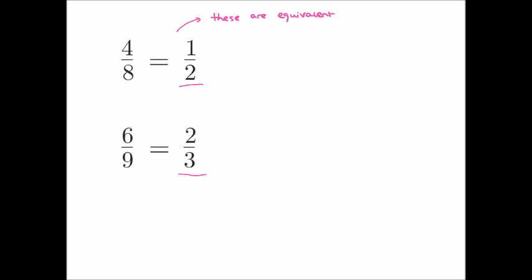To write a fraction in its simplest form, we look to divide both parts by the highest common factor of the numerator and the denominator — in other words, the largest number that divides exactly into both of them. If we look at four eighths, we can divide both four and eight by four: four divided by four is one, and eight divided by four is two, so four eighths simplifies to one half. Similarly, both six and nine can be divided by three — that's the highest common factor. Six divided by three is two, and nine divided by three is three, so six ninths simplifies to two thirds.